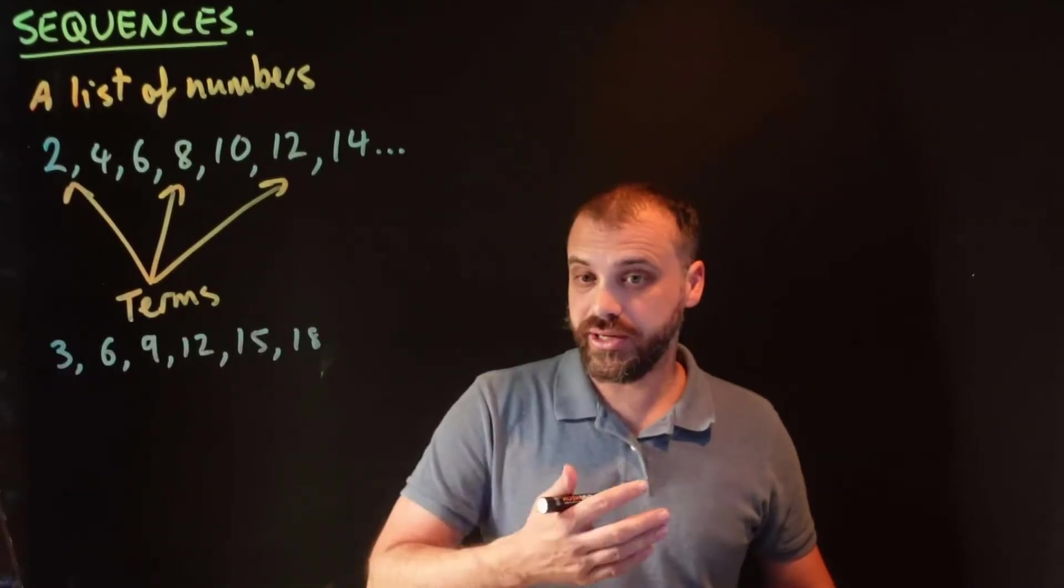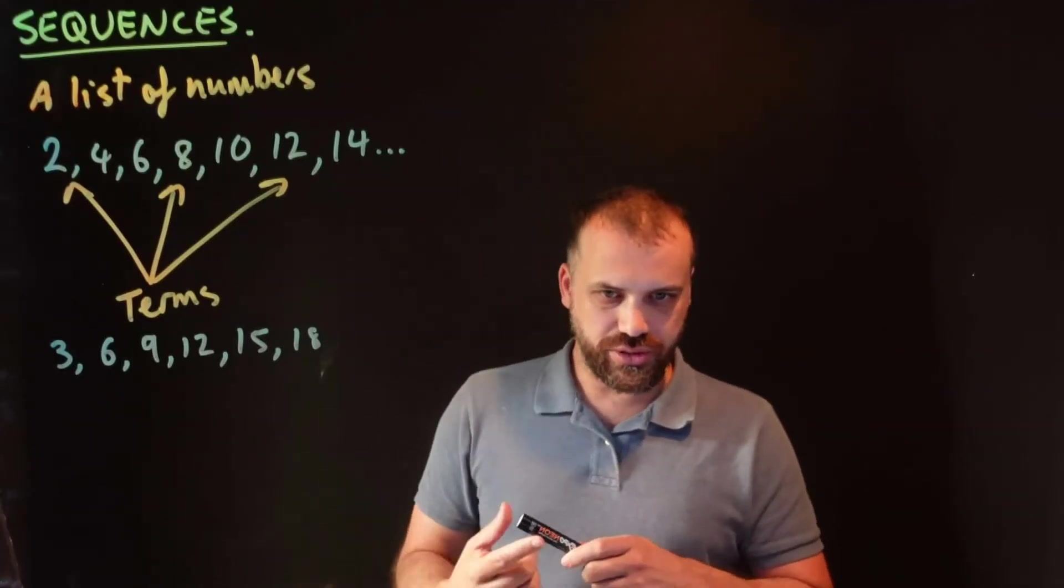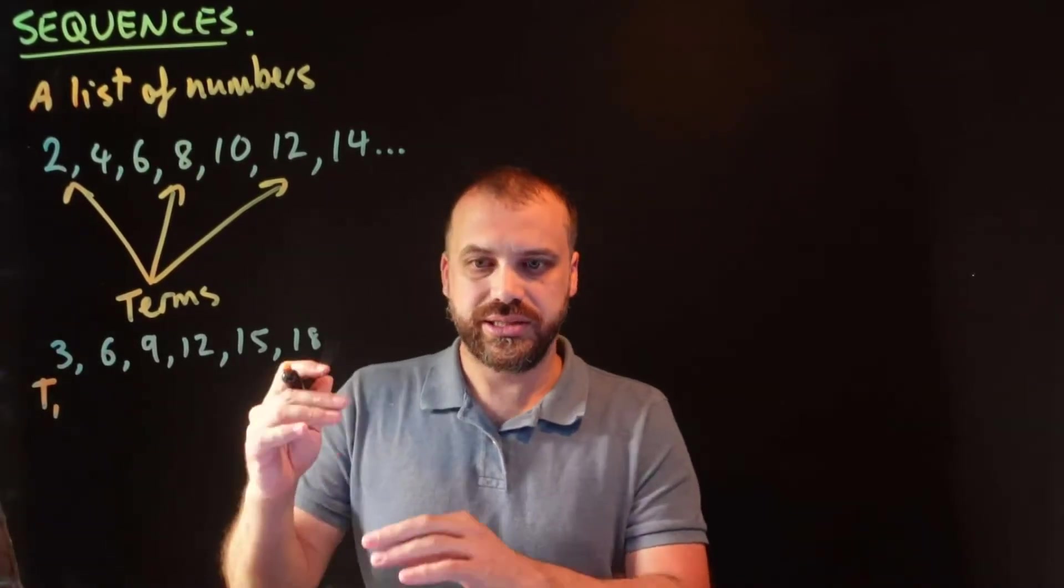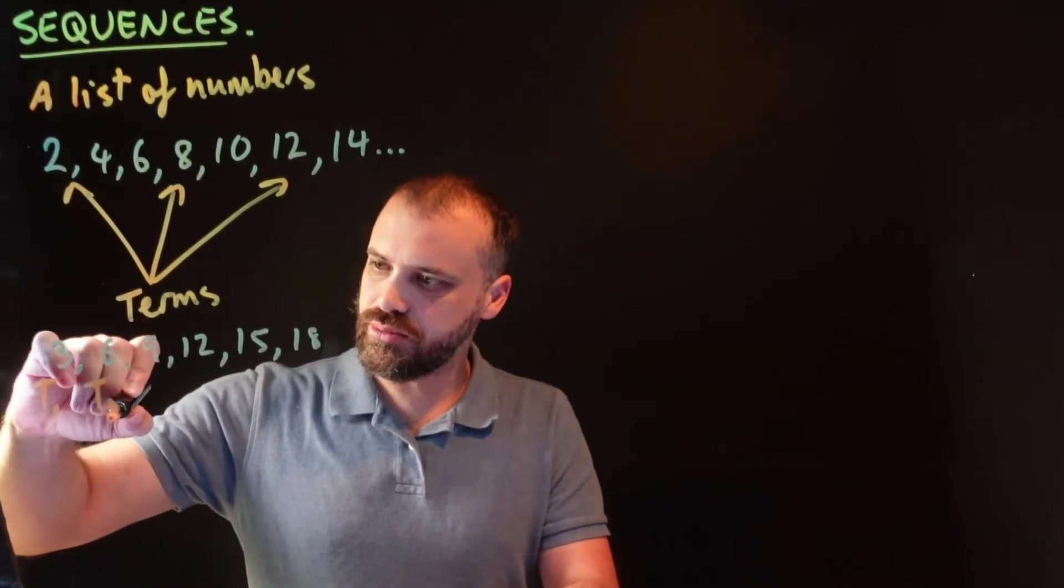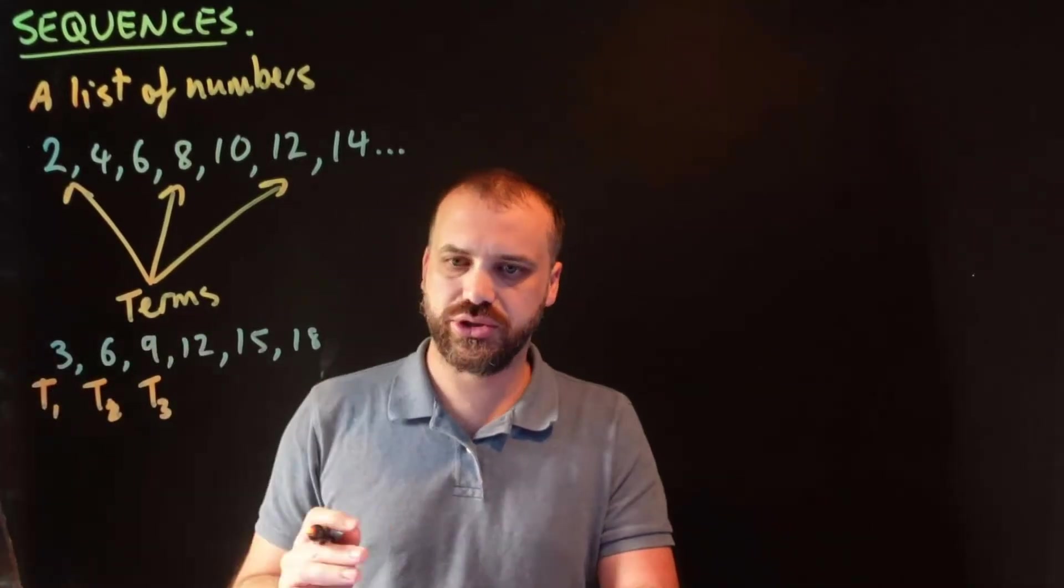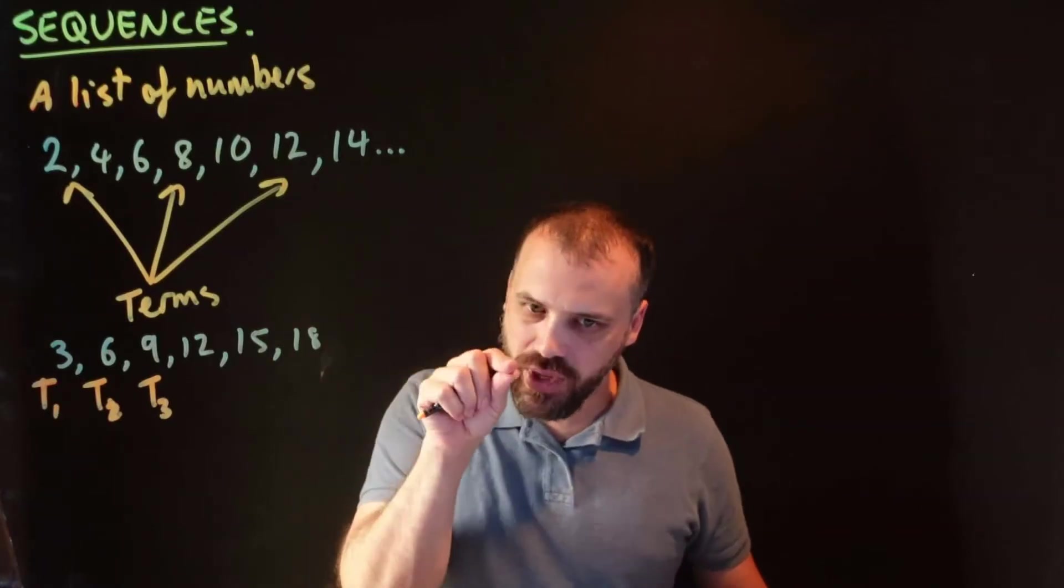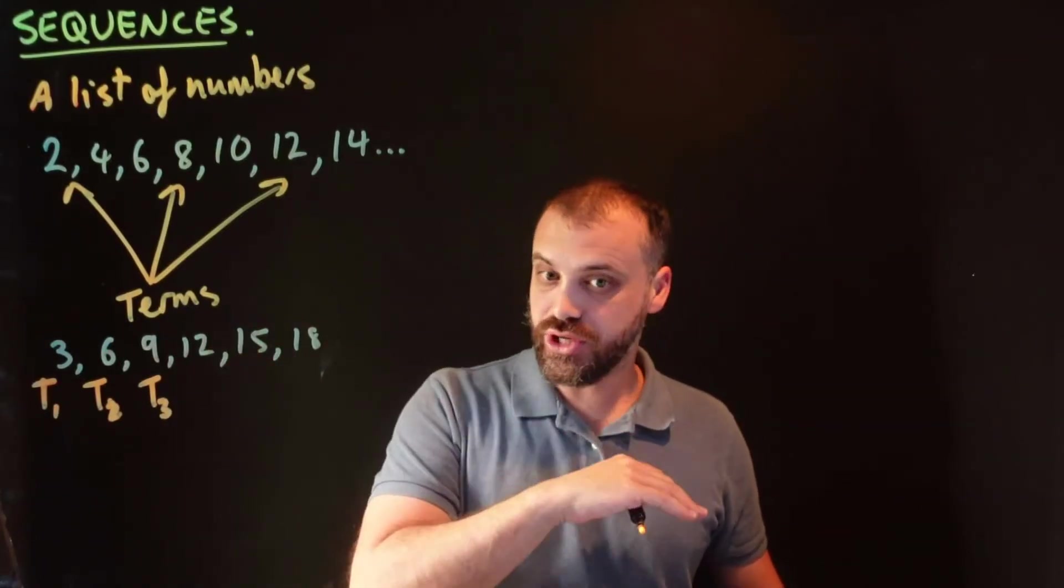Here's another sequence. This time I'm counting up in threes. Now, we can be a bit more specific with our terms. We could call this term 1, T1, right? That's term 1. This one is term 2. This one is term 3, and so on. Notice I'm writing my 1 really small down the bottom of that T. Term 1, term 2, term 3, so on.